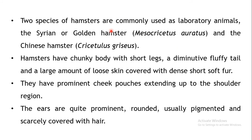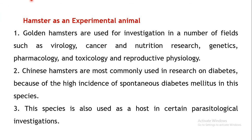The next animal is the hamster. Two species are commonly used: the Syrian or golden hamster, Mesocricetus auratus, and the Chinese hamster, Cricetulus griseus. Hamsters are easily handled and have a chunky body with short legs, a fluffy tail, loose skin, dense short soft fur, and rounded pigmented ears sparsely covered with hair.